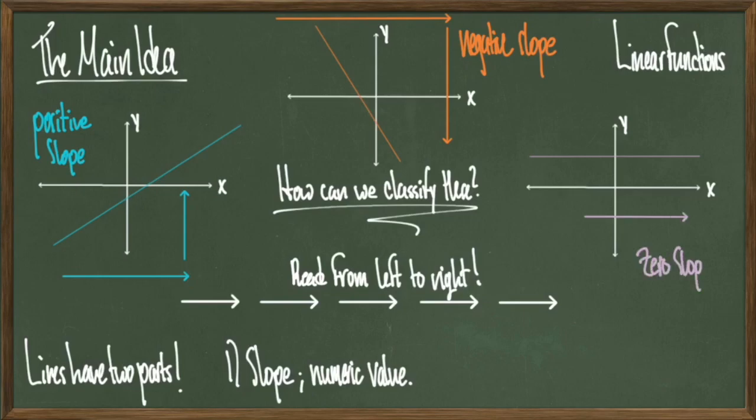Now in the final graph, we notice that this graph doesn't go up or down, so we would say that this has a slope of 0, also called a constant function. The way that constant functions read is you'll typically have f of x equals to a number or y equals to just a number, but no variables will be in play.